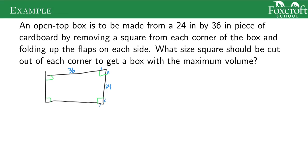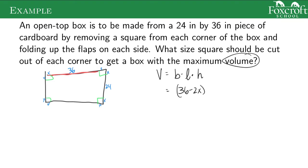We're trying to find the maximum volume of this box. Volume is base times length times height. My base is going to be 36 minus 2x, because I take the full 36, take away those corners, and fold that up. My length is the other side — that's going to be 24 minus 2x for the same reason. I'm taking those edges away. And then the height is just x — I'm taking that flap and folding it up to be the height.